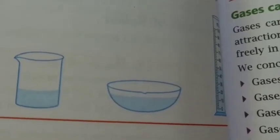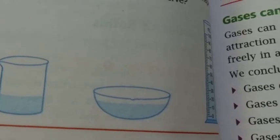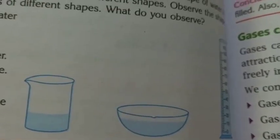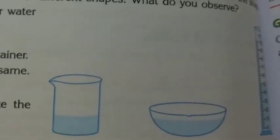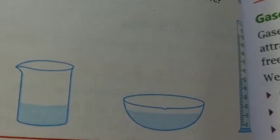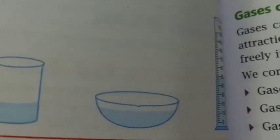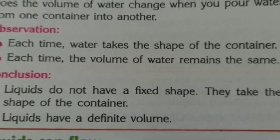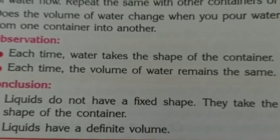We have poured water into a beaker, a bowl, and a measuring cylinder. The water in the cylinder took the shape of the cylinder, the water in the beaker took the shape of the beaker, and the water in the bowl took the shape of the bowl. Each time, the water is taking the shape of the container. So we conclude that liquids do not have a fixed shape — they take the shape of the container — but they do have a definite volume.